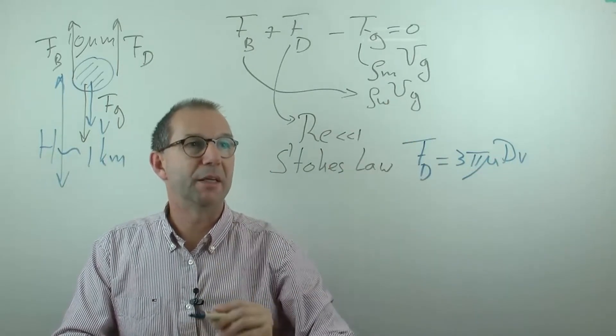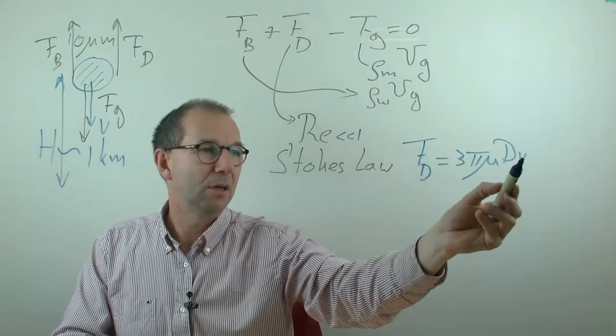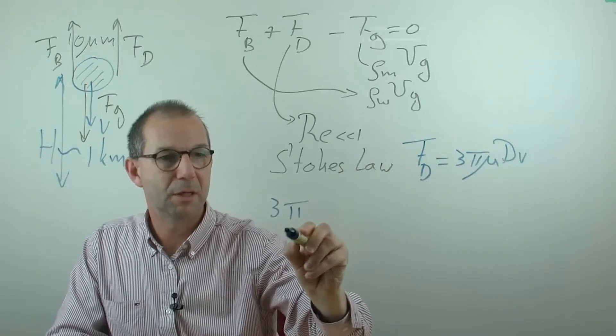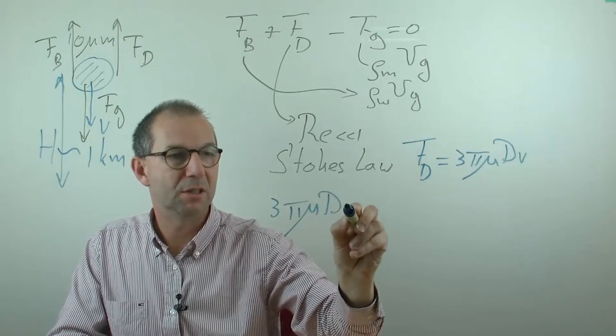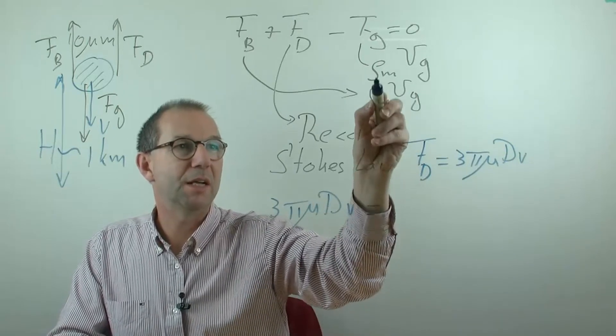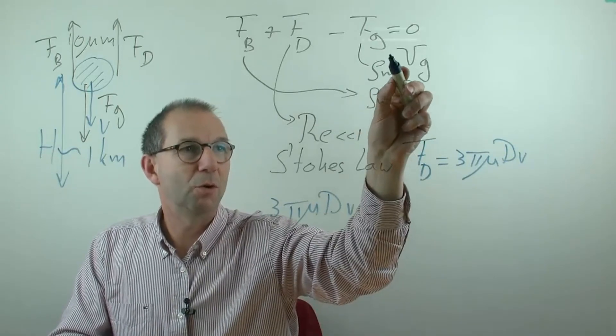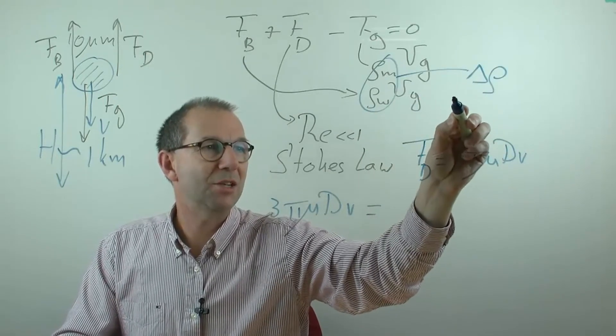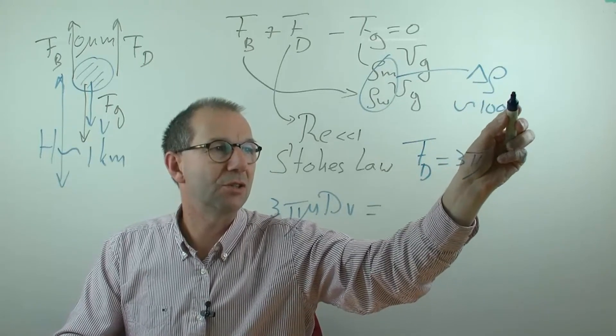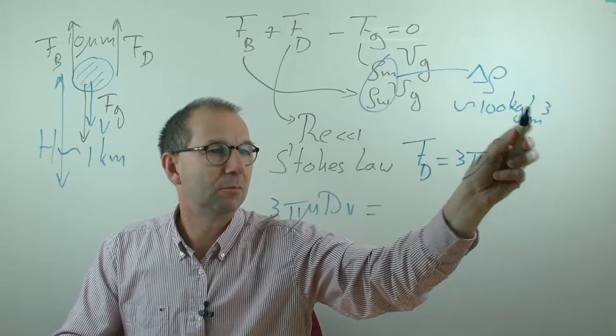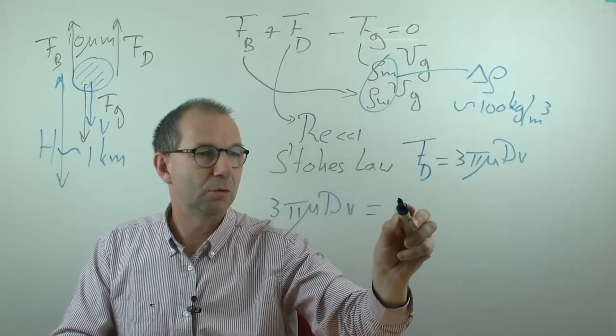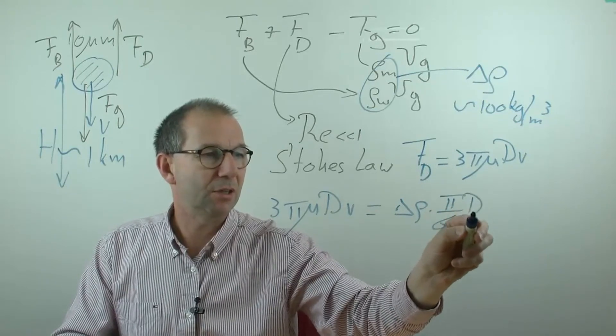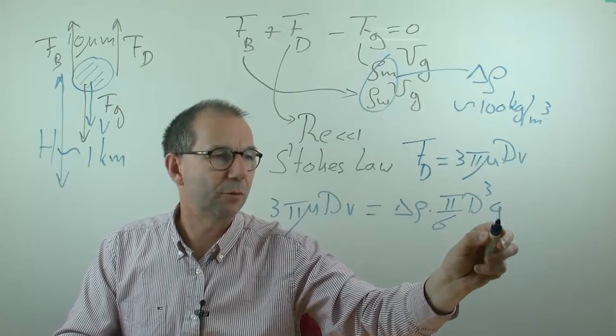Now I need to combine these. Thus I have, linear in the velocity, 3πμdv must equal the net effect of these. I call the difference between these two delta ρ, which we estimate as order of magnitude 10% of the density of water. So it's delta ρ times volume of the sphere, π over 6, d cubed. I shouldn't forget the g from gravity.